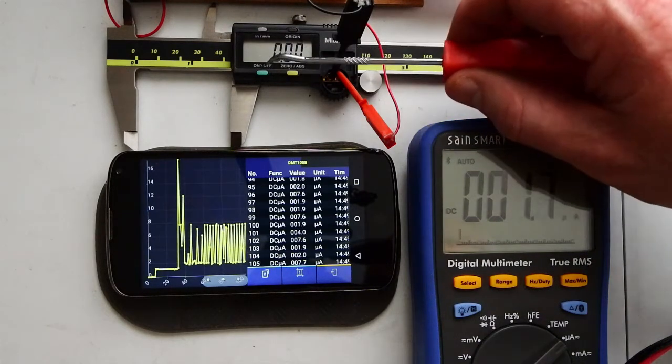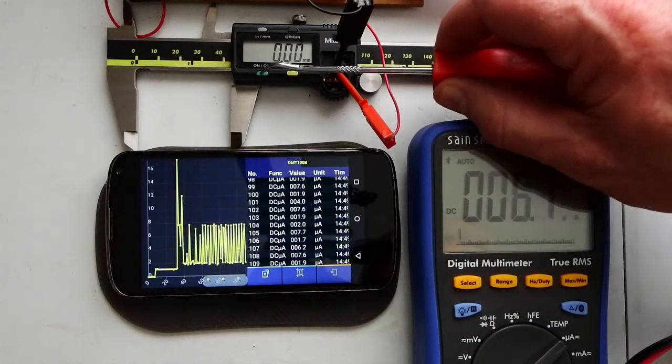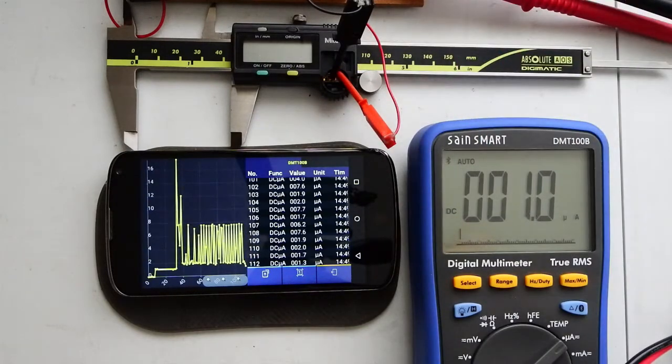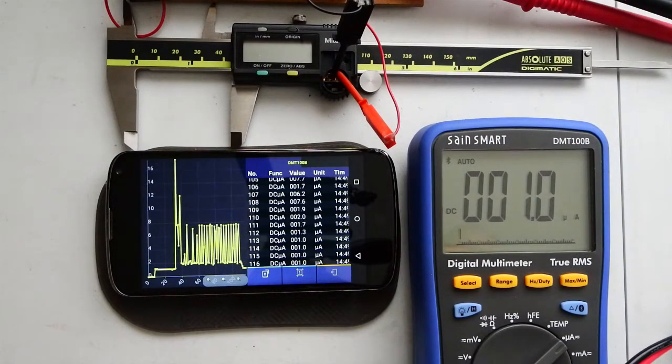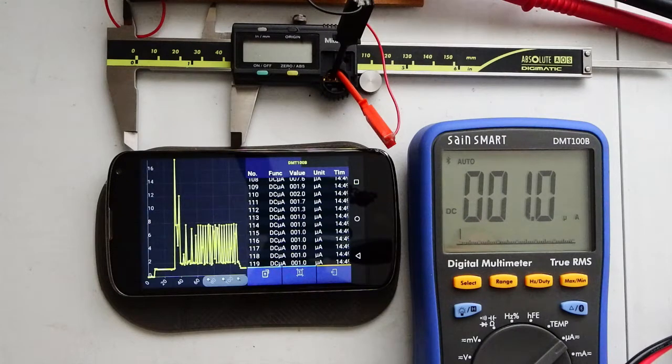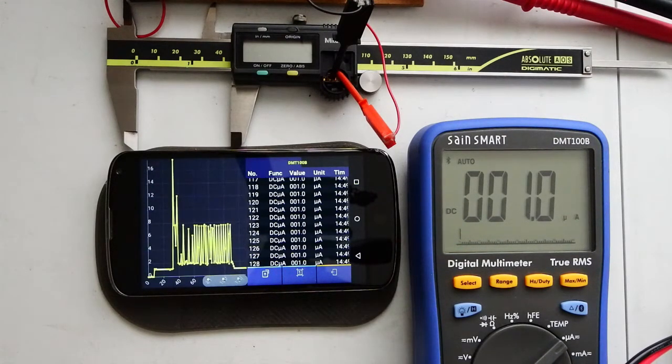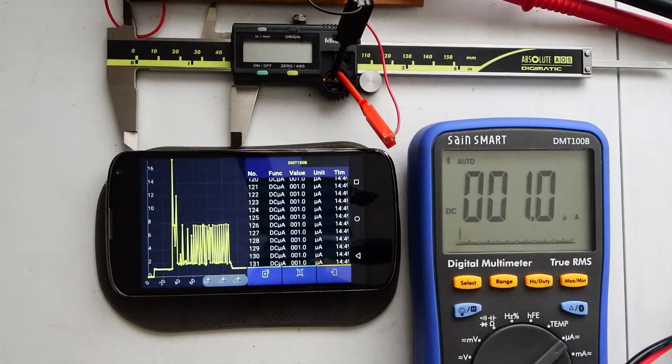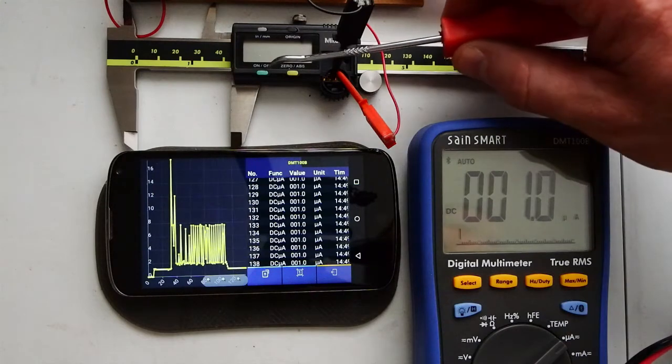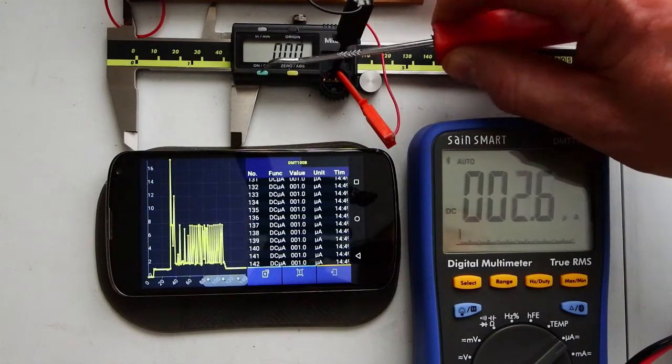Now when I go to switch those calipers off, you'll see the microamps drop down to 1 microamp. So when those calipers are off, they don't power off entirely. They're still consuming 1 microamp to keep its absolute position remembered.